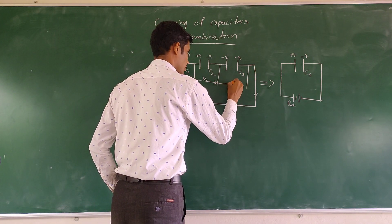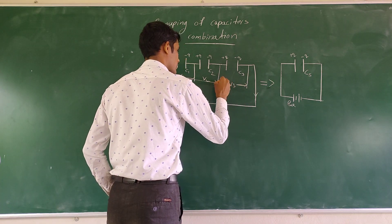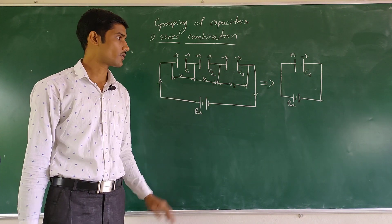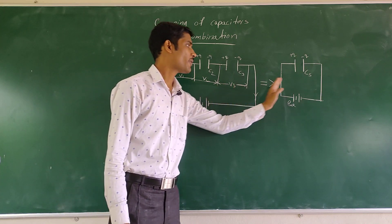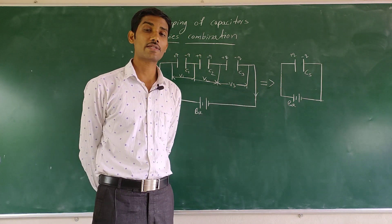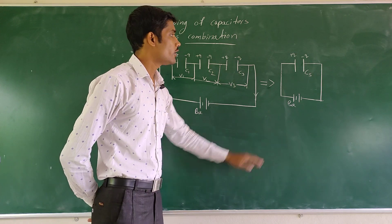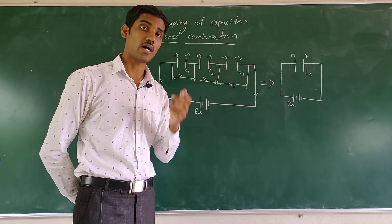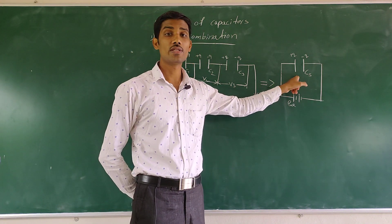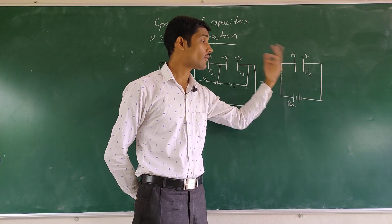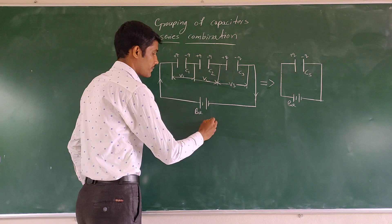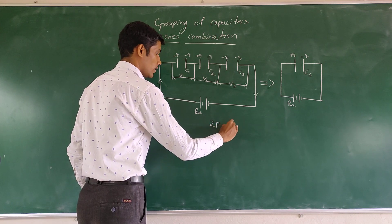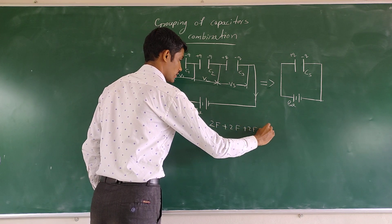The potential differences are V1, V2, and V3. The equivalent capacitance is a combined method — if you combine capacitors, the equivalent capacitance replaces them with the same number of parts. For example, we have a two-farad capacitor, two-farad, three-farad, two-farad.